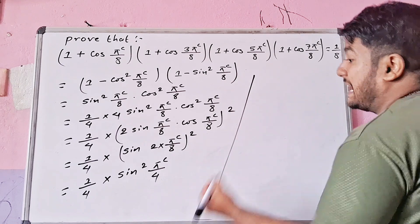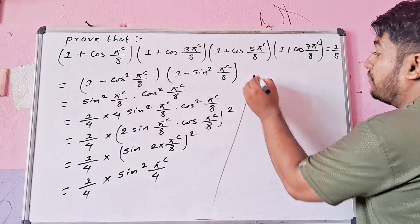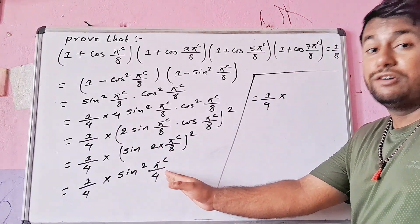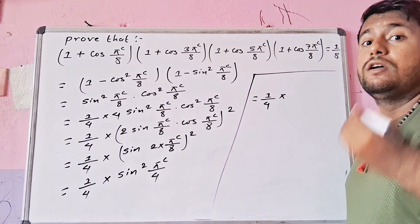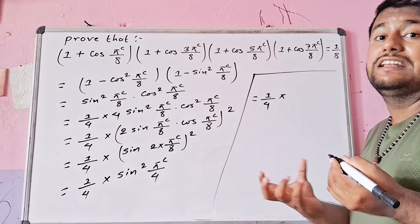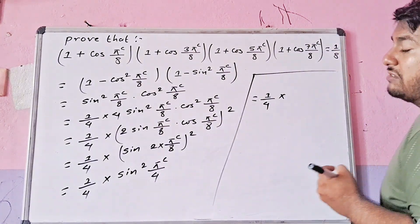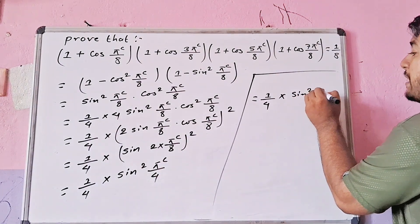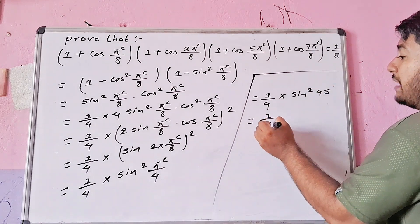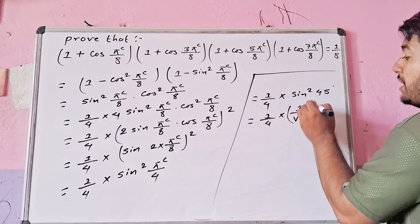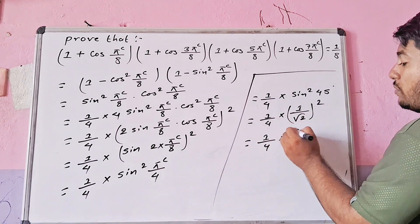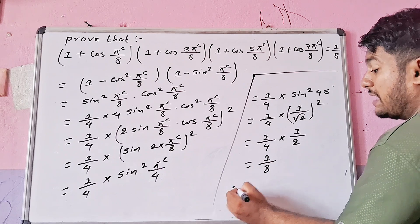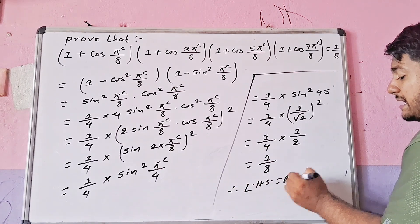We compute 1/4 into sin²(π/4). Since π/4 equals 45°, sin(45°) = 1/√2. So sin²(45°) = 1/2. Therefore, 1/4 × 1/2 = 1/8. Hence LHS equals RHS, and the proof is complete.